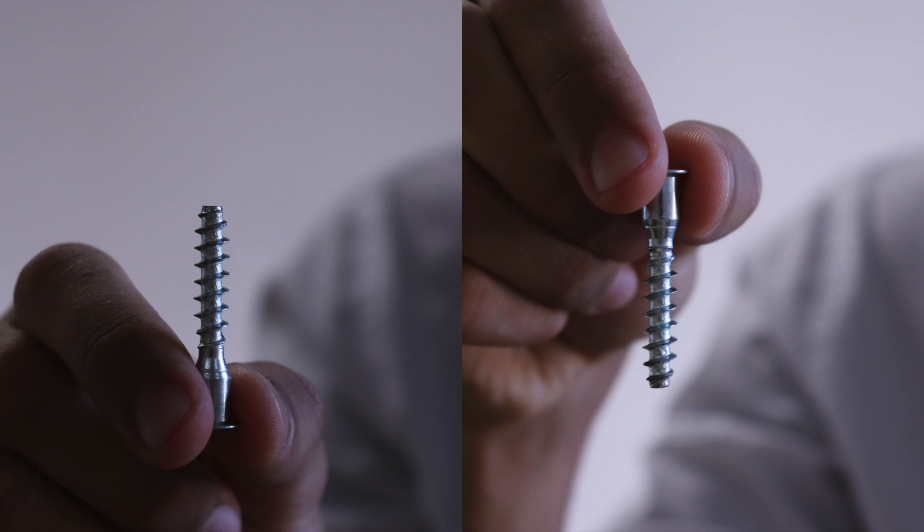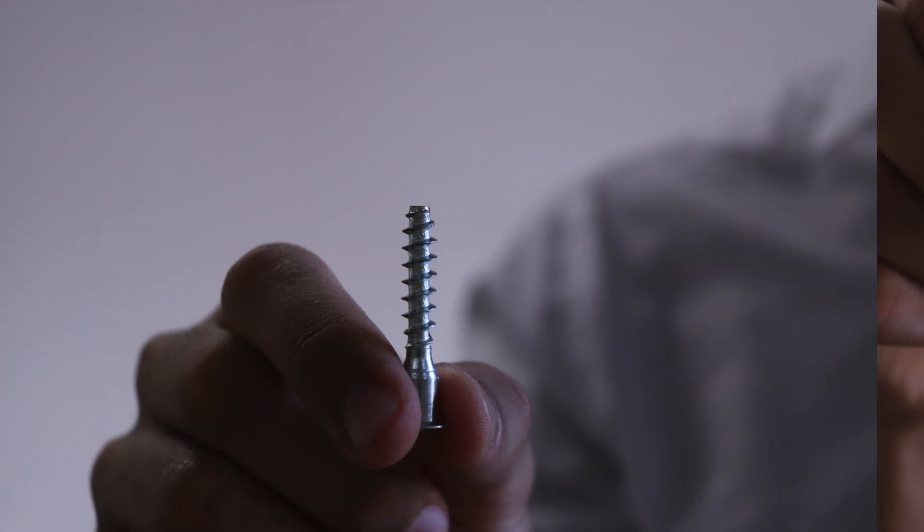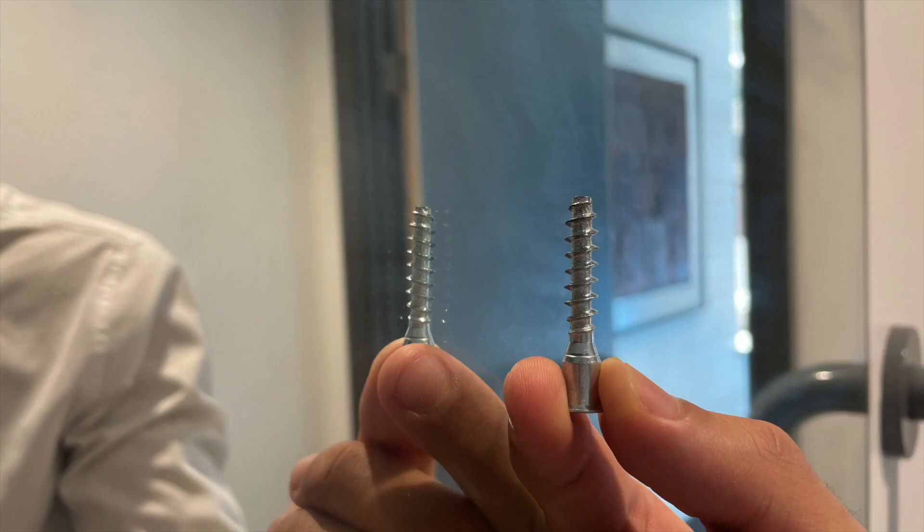So the more molecules there are, either because of a high concentration or a longer distance to travel through, the larger the rotation will be. This also means that only a mirror image of the molecule would rotate it in the other direction, as can be seen for the screw.